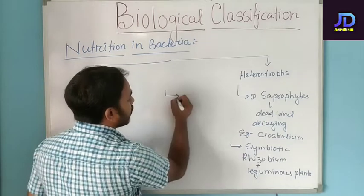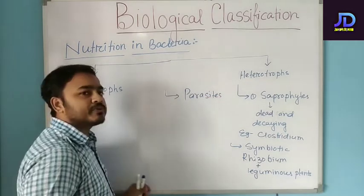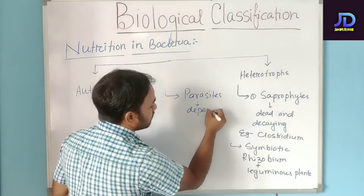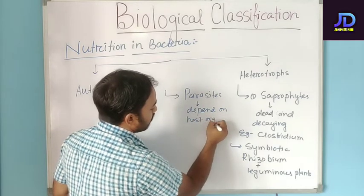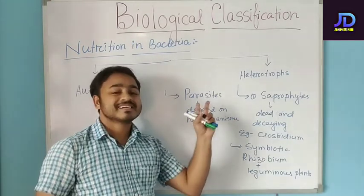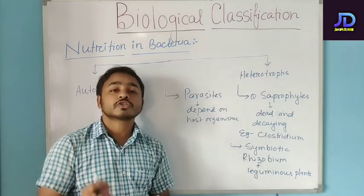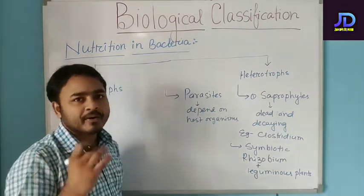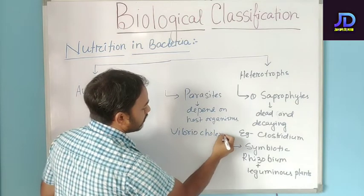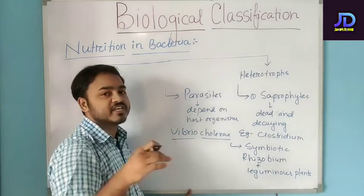The third category of heterotrophs is parasitic, or simply parasites. Parasites totally depend on the host organisms. In most cases, these parasites are harmful. If we consider human beings, most disease-causing organisms are parasites. For example, Vibrio cholerae is a bacteria which causes cholera and is a parasite.